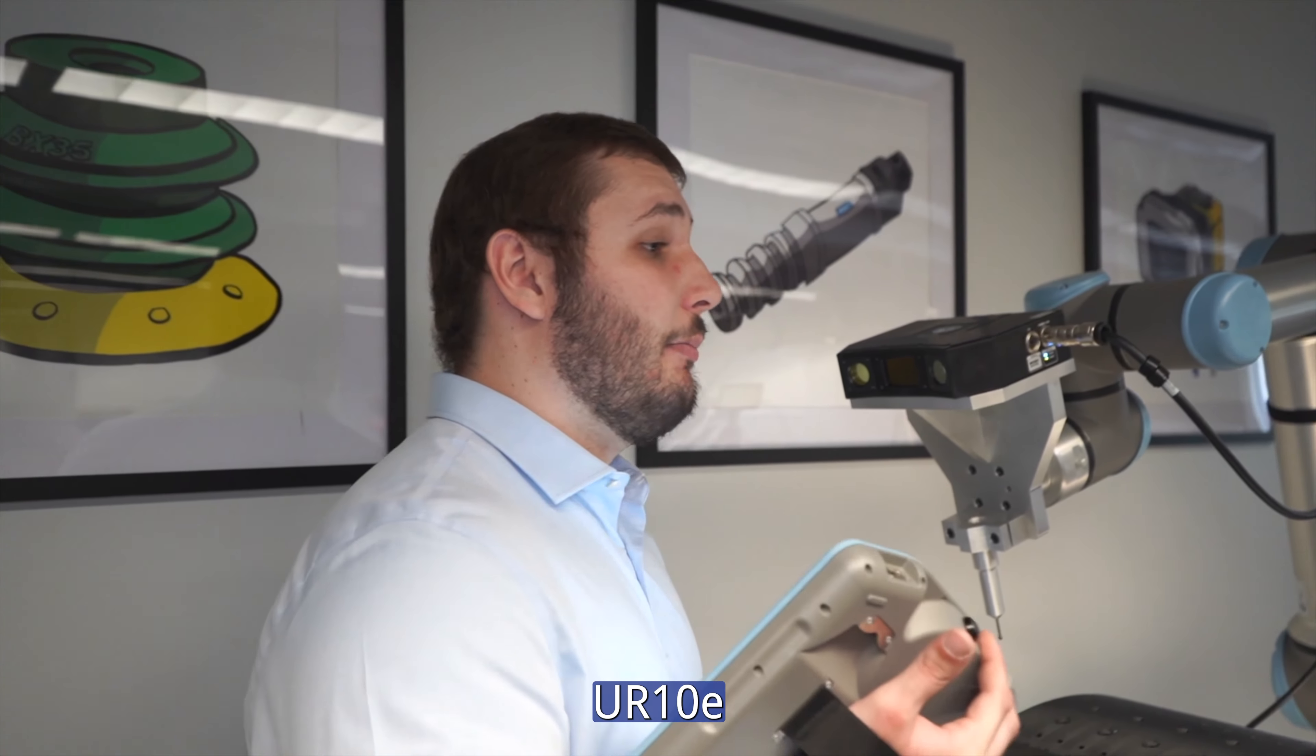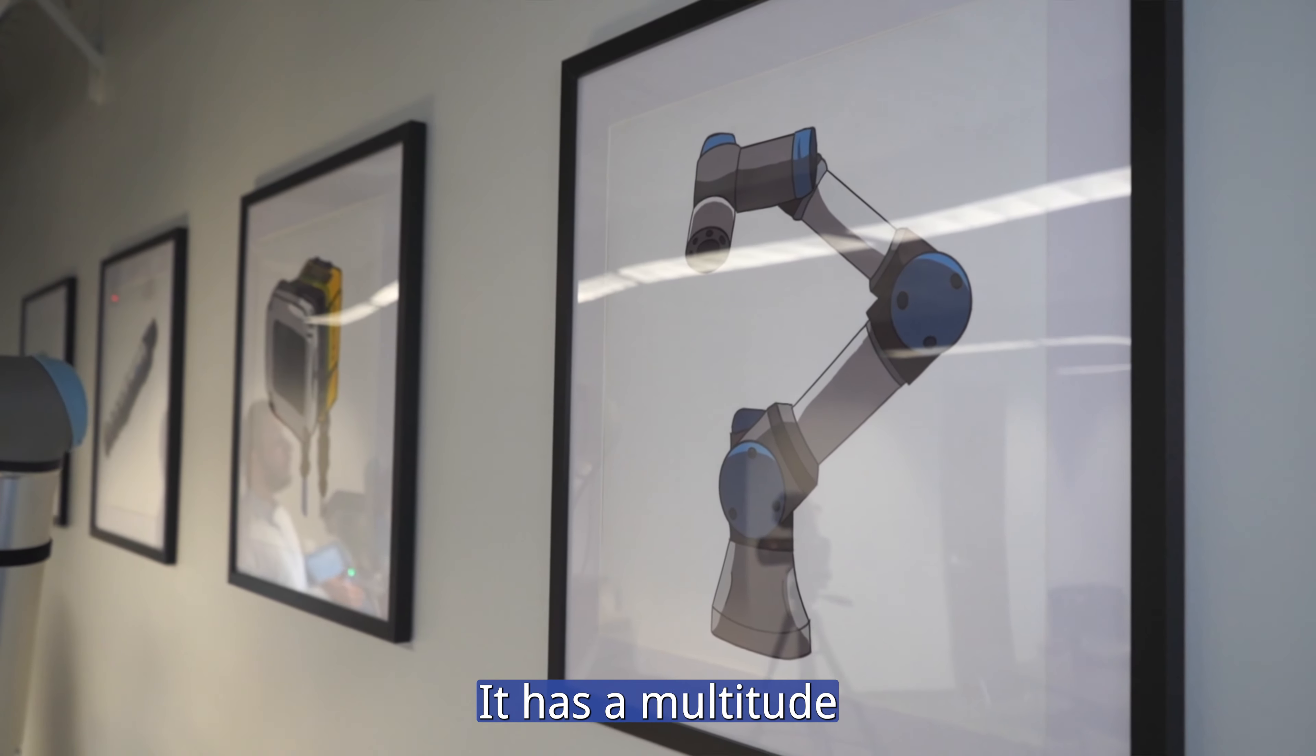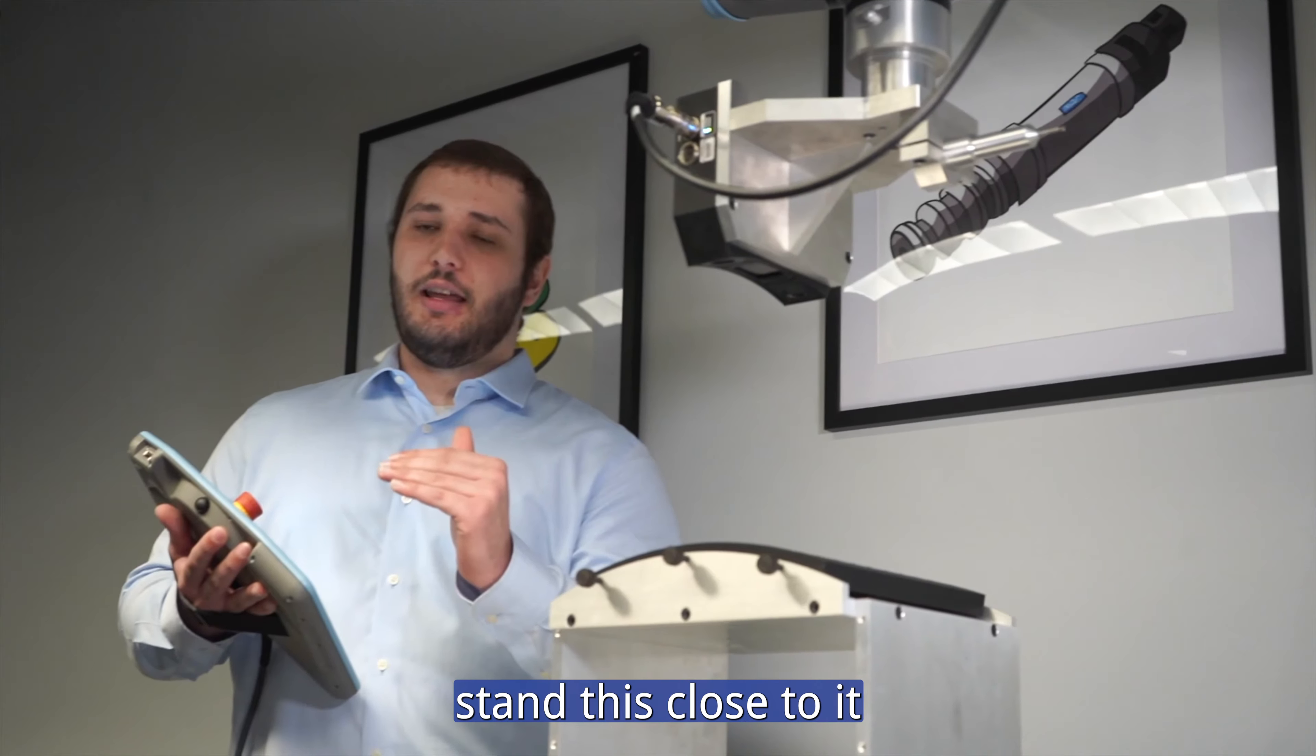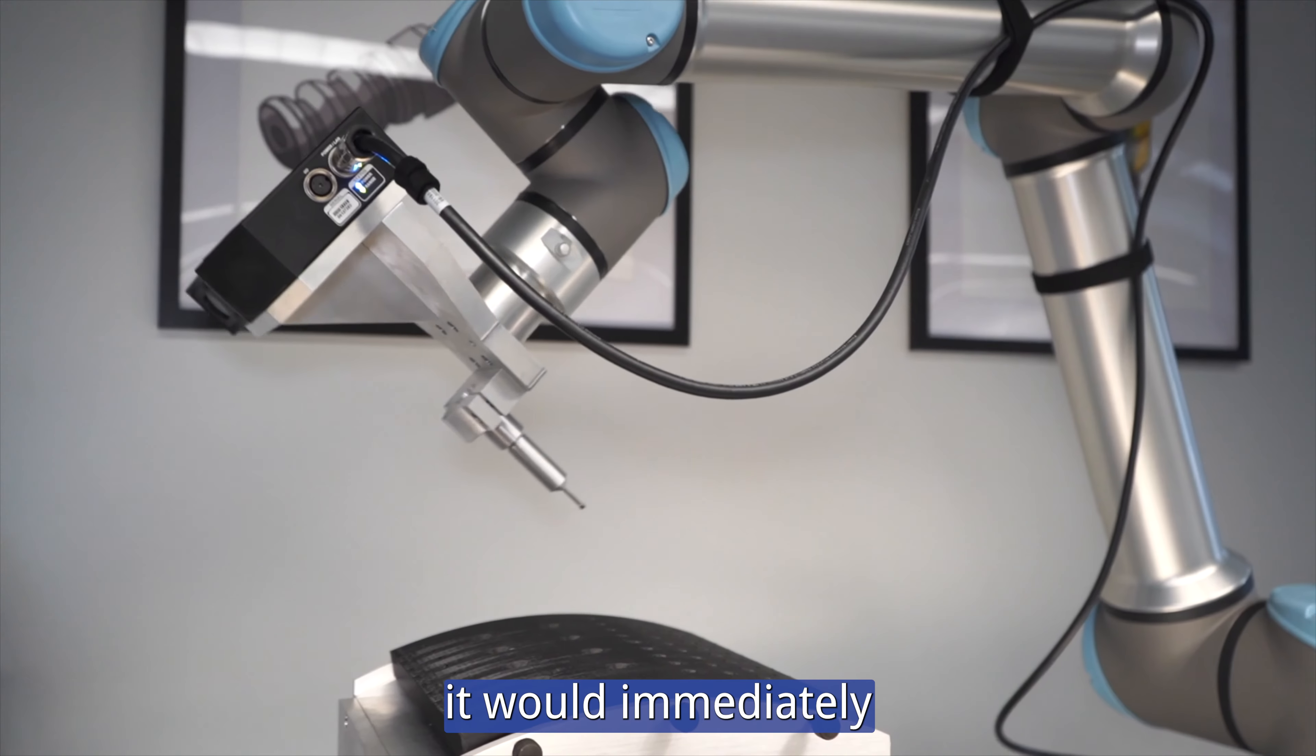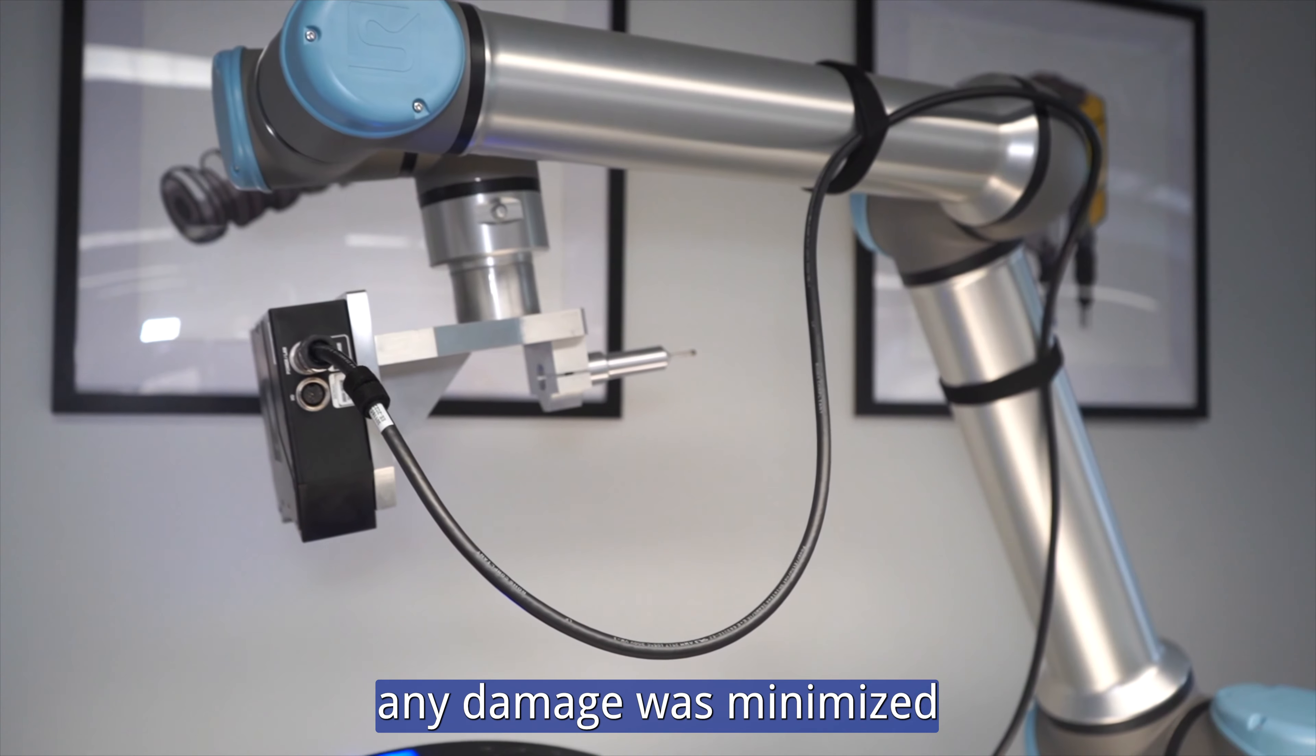The Universal Robotics UR10E is what's called a cobot, a collaborative robot. It has a multitude of different safety features that allows me to stand this close to it while it's operating. One of them being force feedback on every joint. So if this were to collide with something, it would immediately know and halt and engage all the brakes so that any damage was minimized.